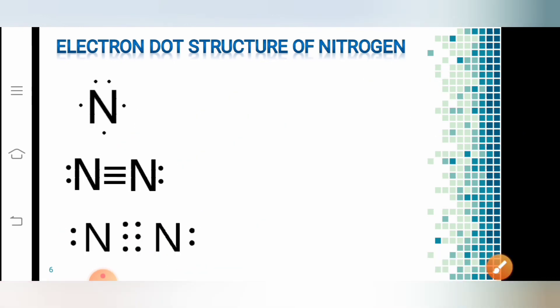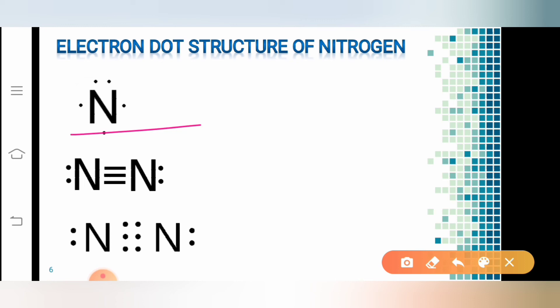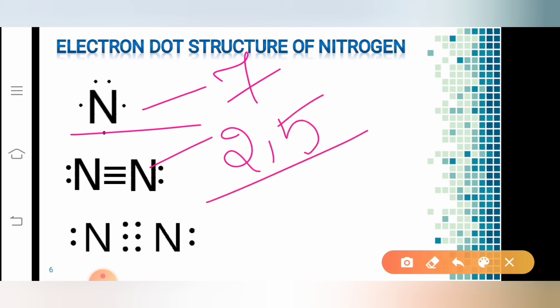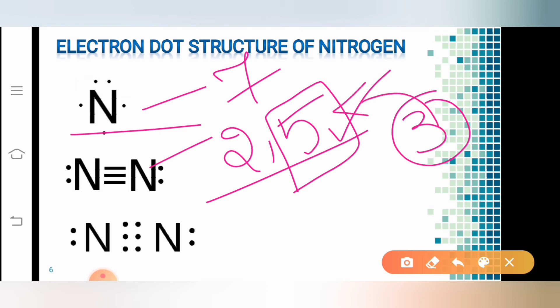Now let us understand the nitrogen atom and write its electron dot structure. The atomic number of nitrogen is 7 and its electronic configuration is 2, 5. Since it has 5 electrons on its outer orbit, it requires 3 more electrons to satisfy its shell and obtain the noble gas configuration.